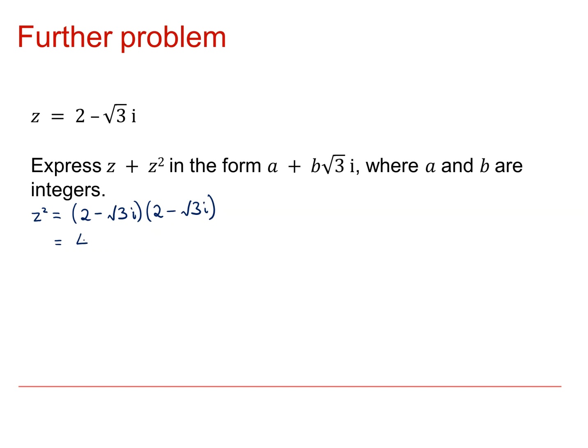So, multiplying out, I get 4 minus 2 root 3i, and then minus another 2 root 3i, so 4 minus 4 root 3i. And then I've got minus root 3i times minus root 3i. So that's plus, root 3 times root 3 is 3, and i times i is i squared. So that's 4 minus 4 root 3i minus 3, which is 1 minus 4 root 3i.